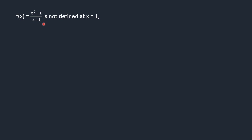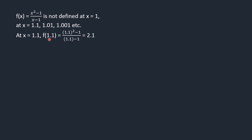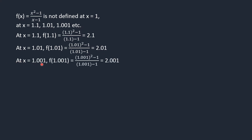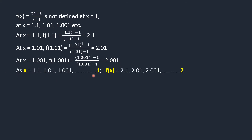We will find the value of f(x) for x equals 1.1, 1.01, 1.001, etc. At x equals 1.1, f(1.1) equals 2.1. At x equals 1.01, f(1.01) equals 2.01. We observe that as x approaches 1 through 1.1, 1.01, 1.001, etc., f(x) approaches 2 through 2.1, 2.01, 2.001, etc.